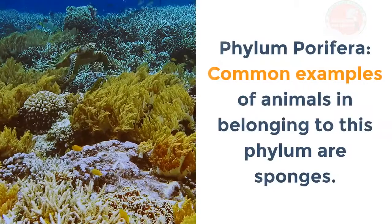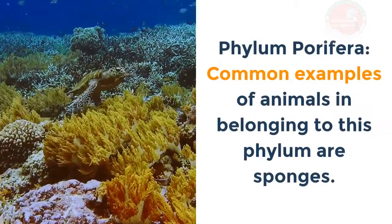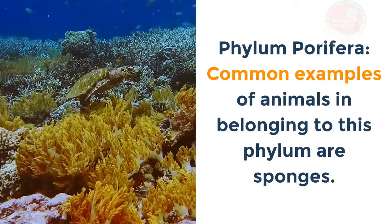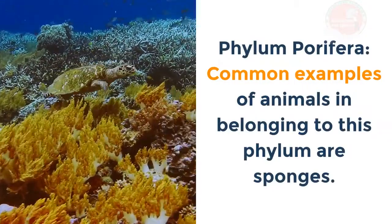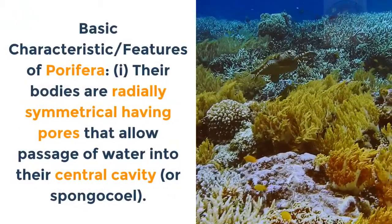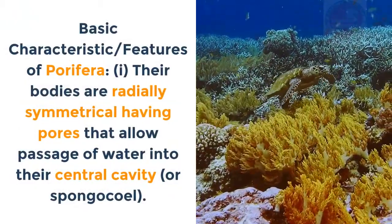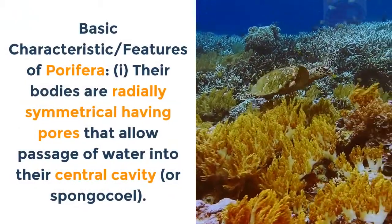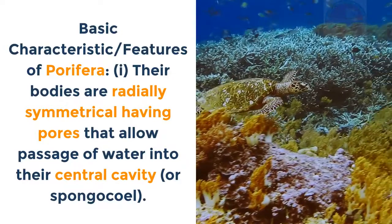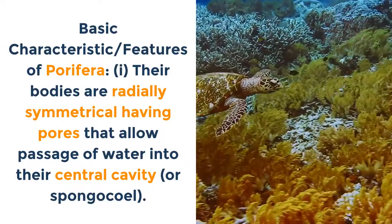Phylum Porifera: Common examples are sponges. Basic characteristics: the bodies are radially symmetrical, having pores that allow passage of water into the central cavity or spongocoel.